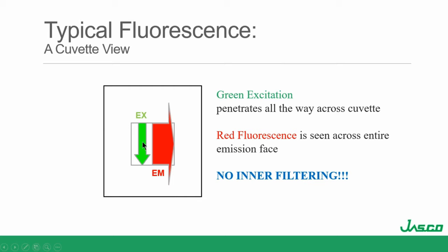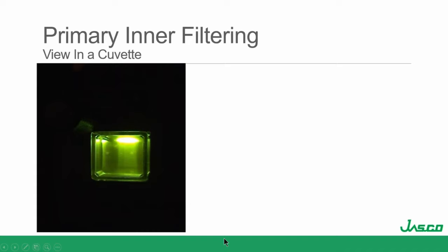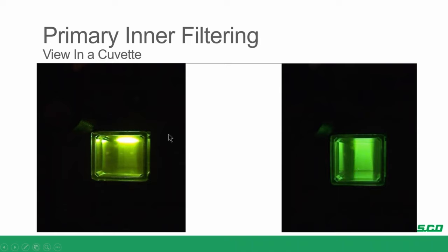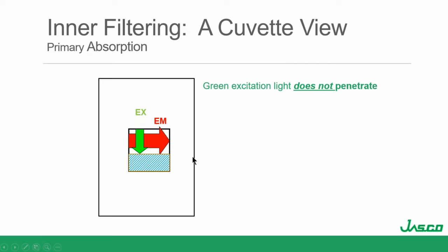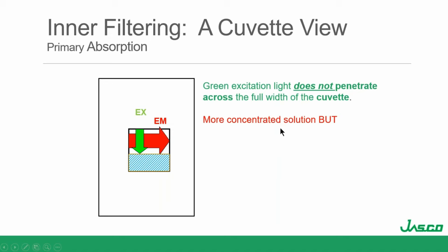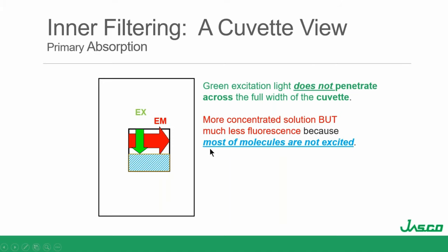There are two types of inner filtering: primary and secondary absorption. In primary absorption, the solution is so concentrated that all of the molecules at the front absorb all of the light — we only see emission from the first couple millimeters of the cuvette. The excitation light does not penetrate across the full width of the cuvette, so we have a more concentrated solution but much less fluorescence because most molecules are not excited. This is primary absorption — sometimes called a pre-filter effect, because it occurs before the emission of a photon of light.